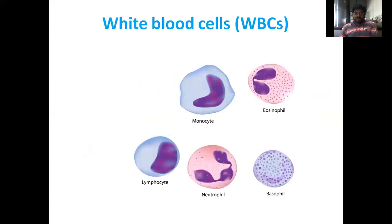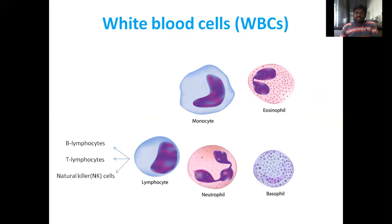White blood cells include monocytes, eosinophils, lymphocytes, neutrophils, and basophils. Lymphocytes are divided into three types: B-lymphocytes, T-lymphocytes, and natural killer cells. Monocytes are in a non-activated stage, but when activated they are converted into macrophages.